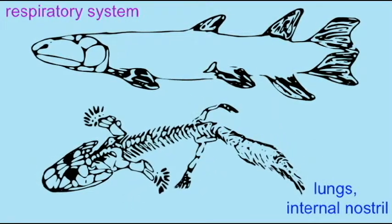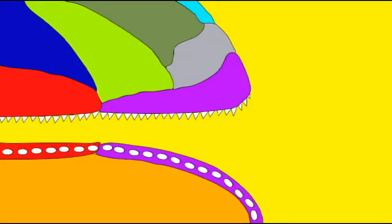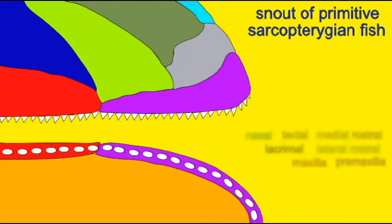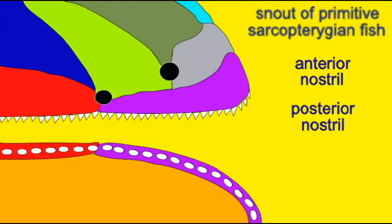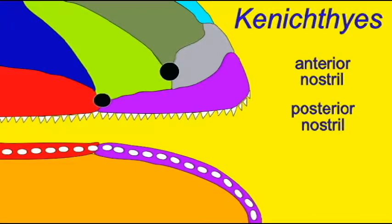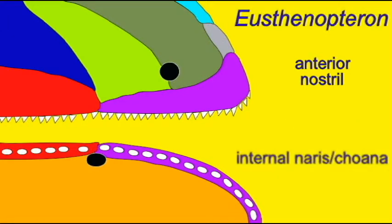In the same way, the internal nares, the opening for the posterior nostril which is actually inside the roof of the mouth rather than exteriorly on the face, had also evolved in Sarcopterygian fish. So many of the respiratory adaptations which would allow tetrapods to live on land had actually evolved in the ancestors of tetrapods, Sarcopterygian fish.